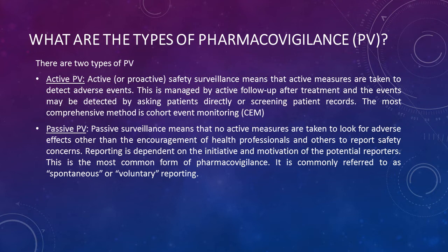The second type is passive PV. Passive surveillance means that no active measures are taken to look for adverse effects other than the encouragement of healthcare professionals and others to report safety concerns. Reporting is dependent on the initiative and motivation of potential reporters. This is the most common form of pharmacovigilance, commonly referred to as spontaneous or voluntary reporting.